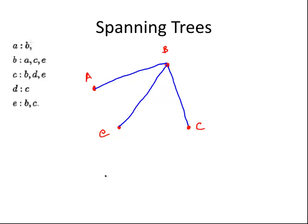Now C is connected to B, D and E. So I just have to add in vertex D — I'm going to put that there — and connect it. D is connected to C, so that's sorted. And E is connected to B and C. I should have connected C to B already. So that is our graph G.